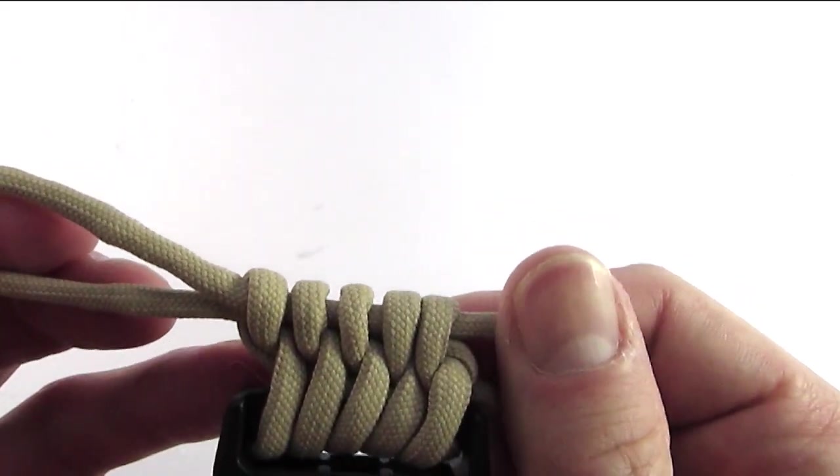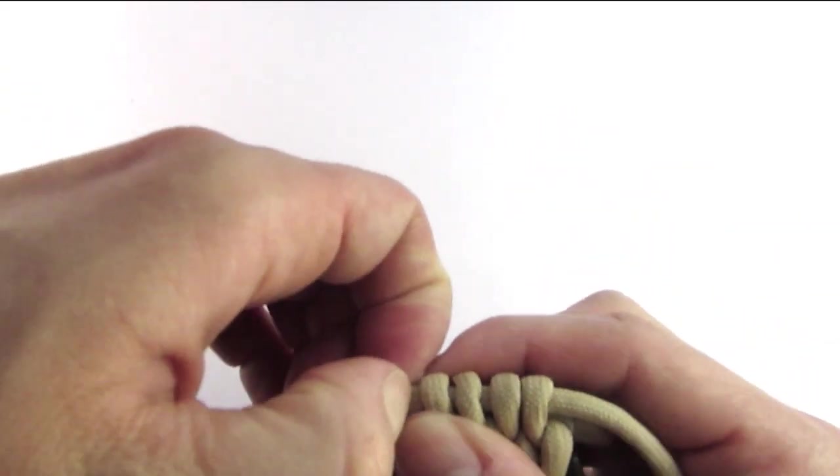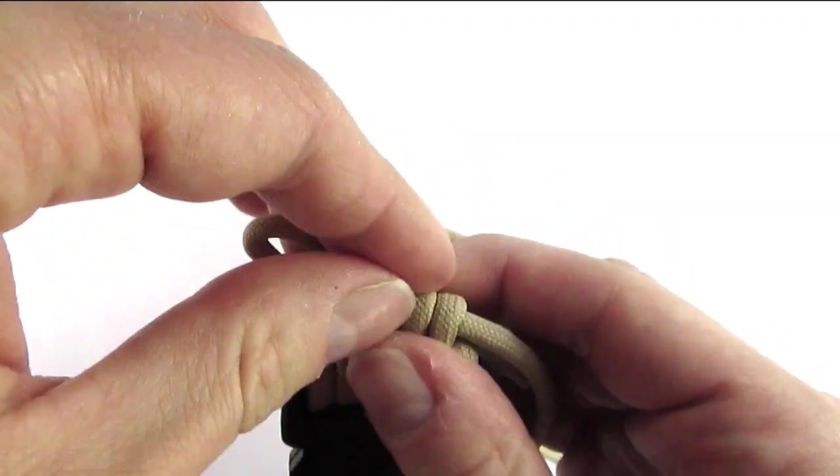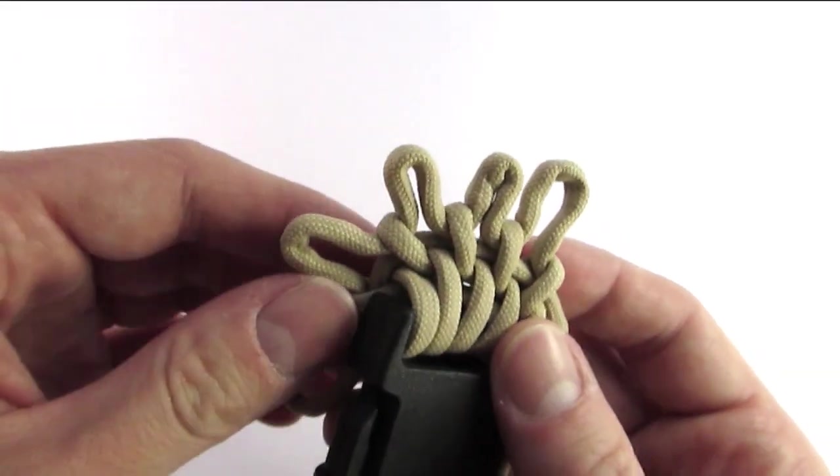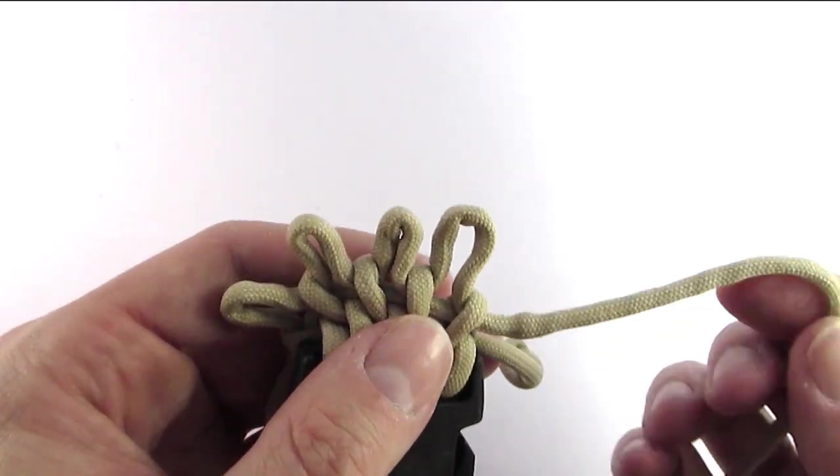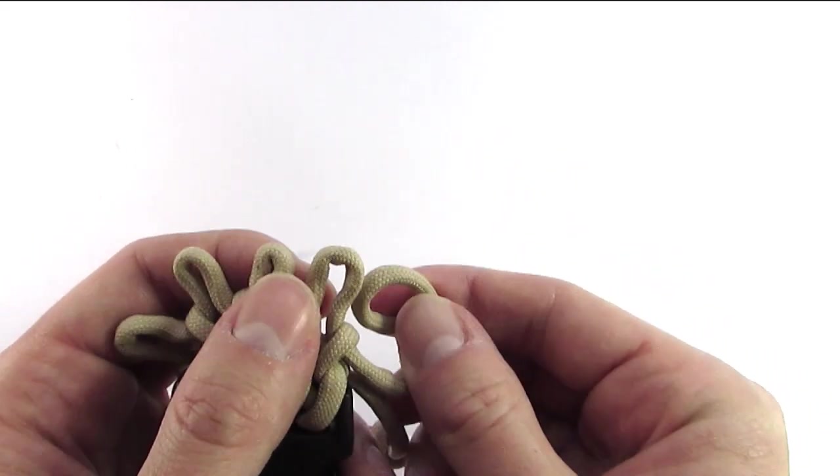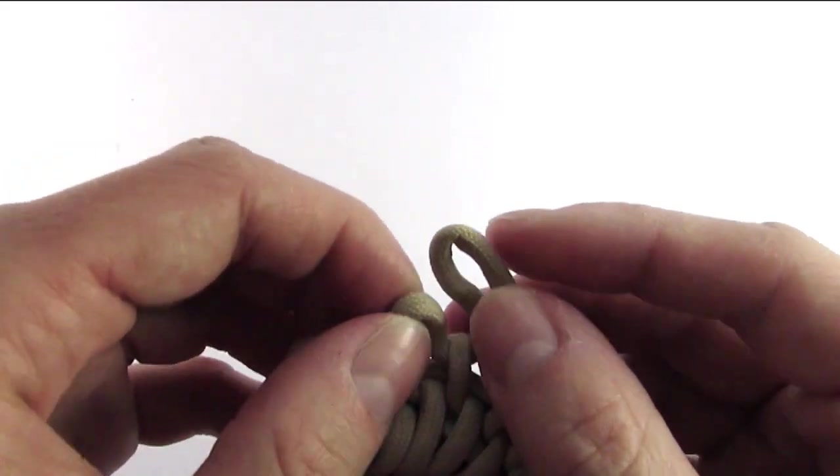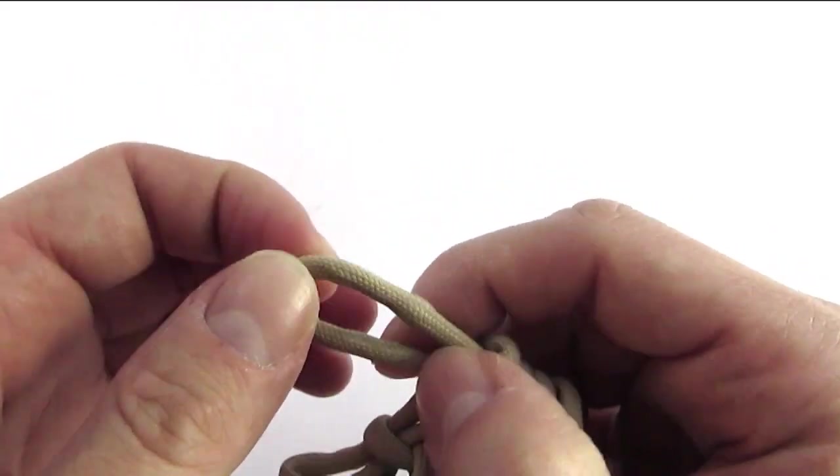To continue, we're again going to pull on the cord to make new loops. And again we're going to insert the folded working end through them. You can also imagine that you're basically putting the working end under the loops. And we've completed another section. We just need to tighten it up again.